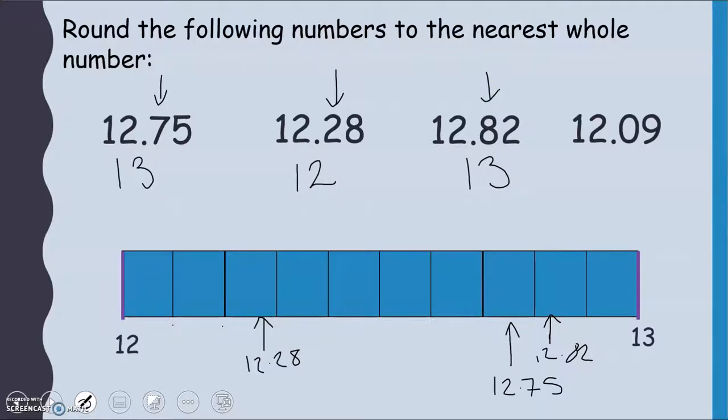And my 12.09 here, I need to be careful. Remember, it's still this 0 that I'm looking at. 12.09 is going to be roughly about here. So that is much closer to 12. So 0 tells us to keep our 12 the same.